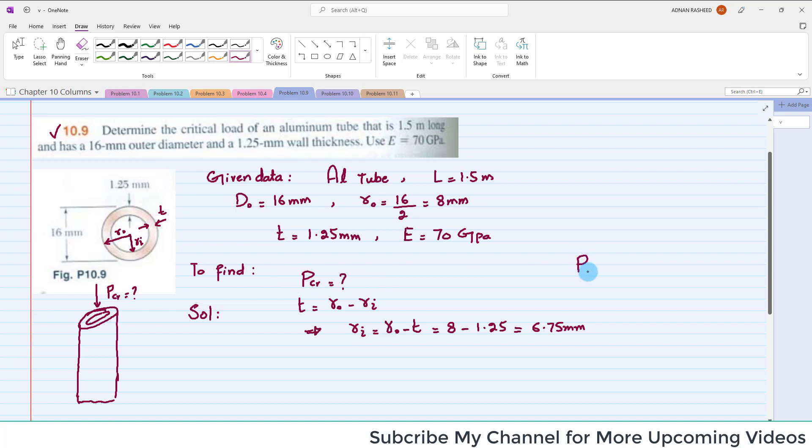As we are going to find out P critical load for this centric load, P critical as we know is equal to pi squared E I over L squared. I will suggest to write the formulas for the things you are going to find, then start solving. From this formula we have E, we have L, we do not have I.